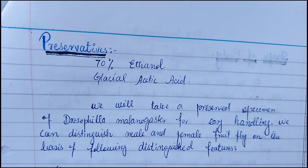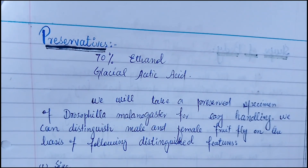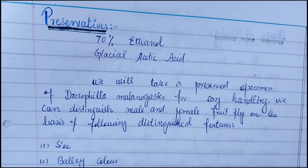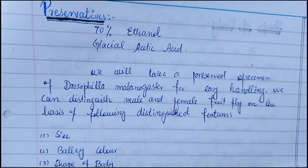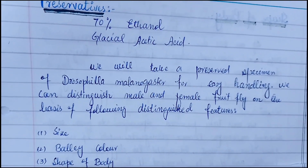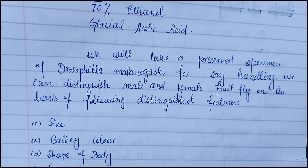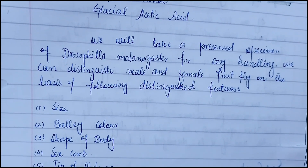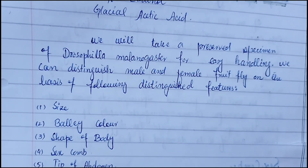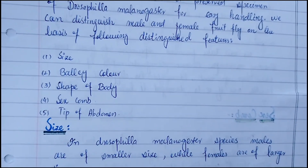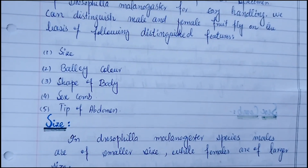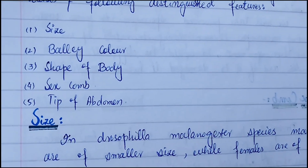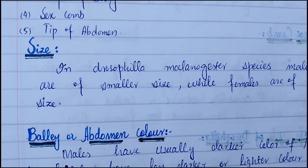Now let's come to preservatives. 70% ethanol or glacial acetic acid is used to preserve the specimen of Drosophila for easy handling. We can distinguish male and female Drosophila fruit fly on the basis of the following distinguishing features: size, belly color, shape of body, sex combs, and tip of abdomen.